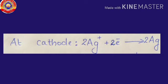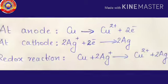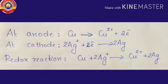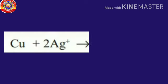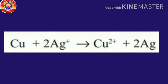As the above reaction is an example of a redox reaction, the overall reaction is given by Cu plus 2Ag+ gives Cu2+ plus 2Ag.